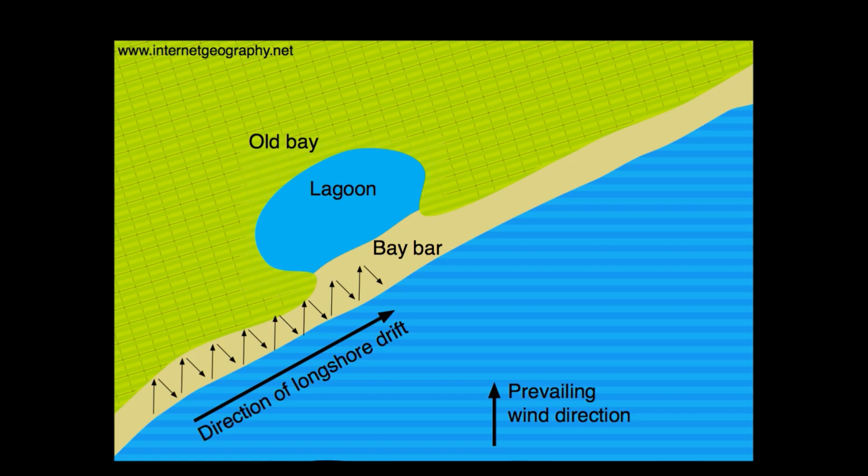But longshore drift doesn't always create a spit formation — it can also create a bar. A bar is when the longshore drift pushes the sediment off one coastline and it joins onto the other. For example, if there is a river going out into the sea, a bar may form there.